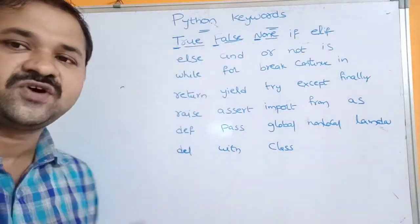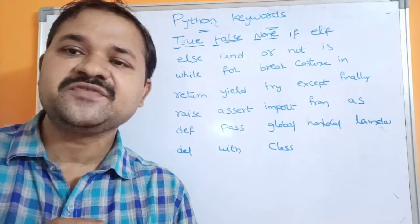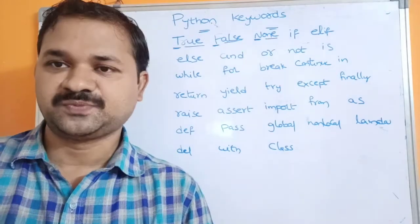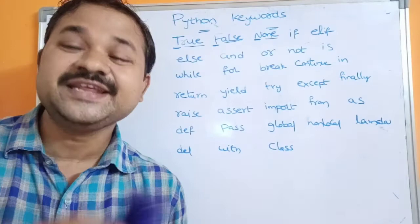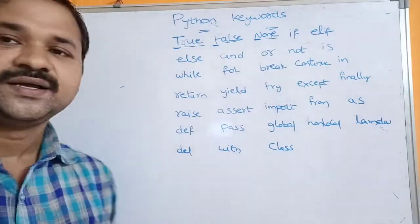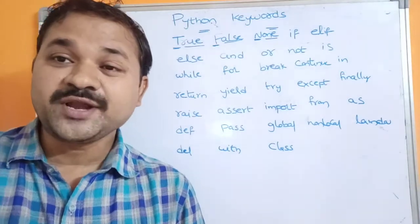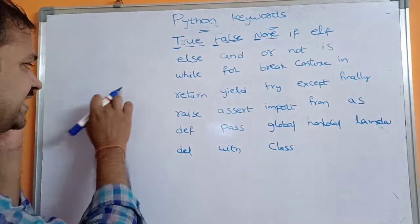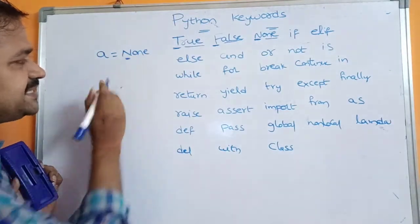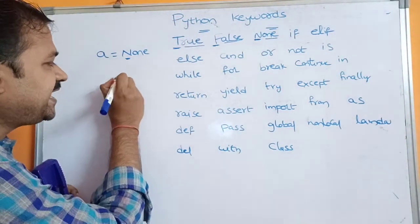True and False are Boolean values. A Boolean value may be either True or False — True means one and False means zero. The result of any conditional expression is a Boolean value. None indicates that the corresponding variable has no value — it has a null value. We can declare it like this: a = None, which specifies that a has no value, that is, a has a null value.